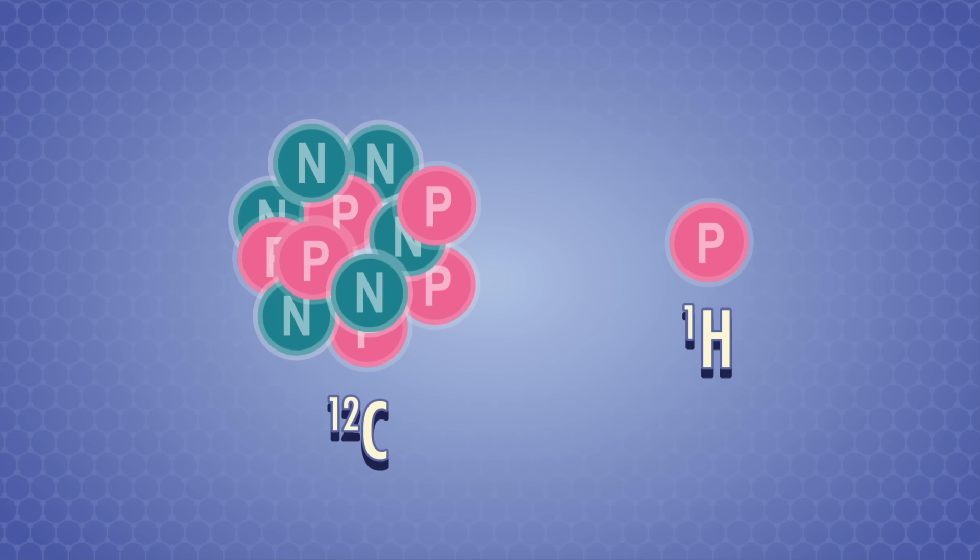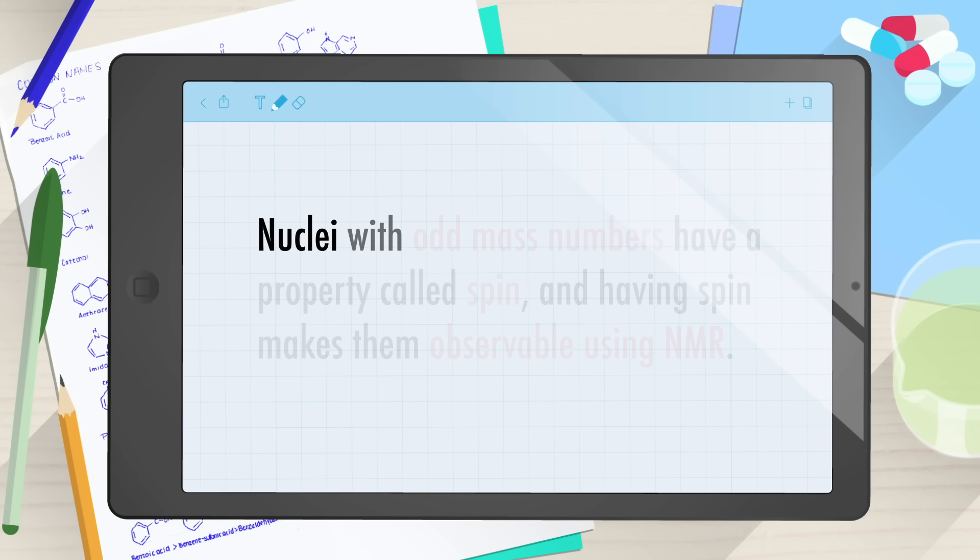First off, let's straighten one thing out. The nuclear part of NMR's name doesn't refer to nuclear power. It refers to the nuclei of atoms. All atomic nuclei are made up of protons and neutrons, except for hydrogens, which doesn't have any neutrons. Adding up the protons and neutrons gives us the atom's mass number. Nuclei with odd mass numbers have a property called spin, and having spin makes them observable using NMR.